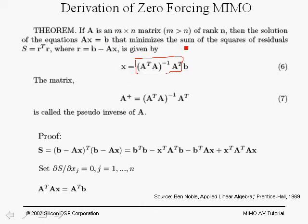Using the pseudo-inverse minimizes the sum of the squared residuals. In the MIMO system, B is the received signal Y, X represents the two transmit streams X1 and X2 for a 2x3 system, and A is the channel matrix H which is assumed known — obtained through a training mechanism we'll detail later. Let's now give a proof of the theorem.